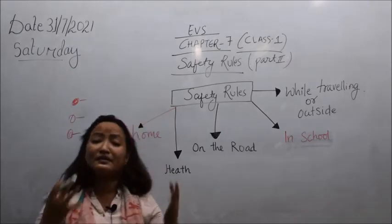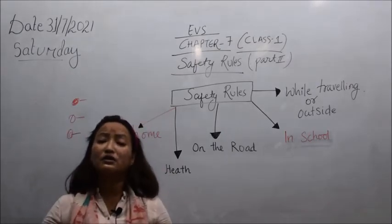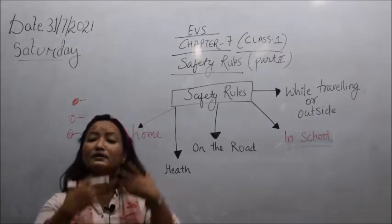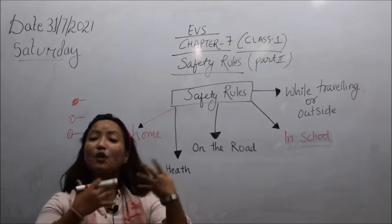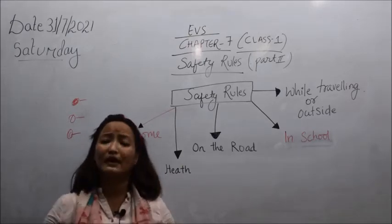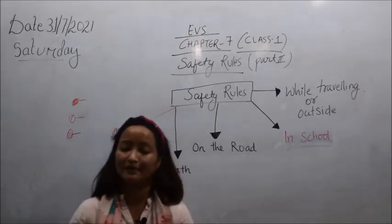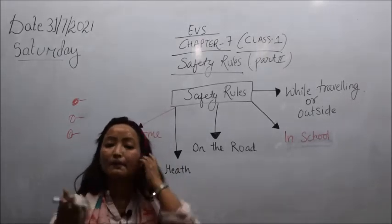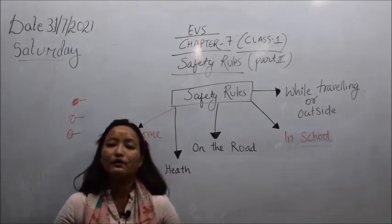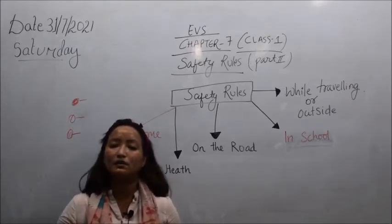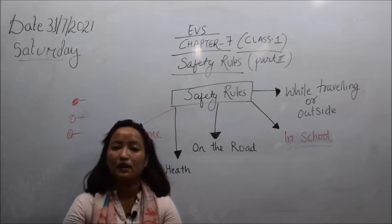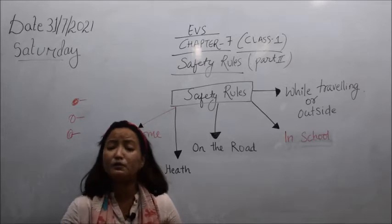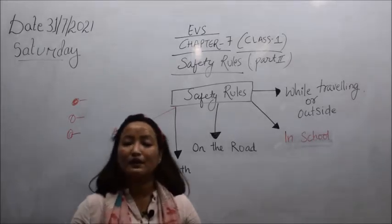There are some basic rules and regulations you need to follow while traveling, on the roadside, at school, and at home. There are safety rules and measures you need to understand and follow in your life. You can't guarantee your life — anything can happen. If you fall sick, illness doesn't come with warning, so before that we have to take care of ourselves.